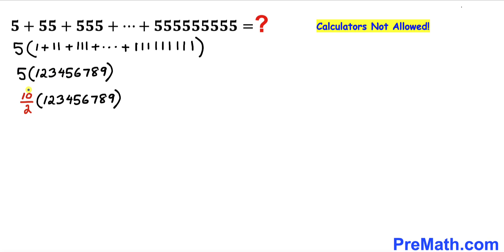Now in this next step I'm going to multiply this 10 with this whole number. So therefore on the numerator we are going to get 1, 2, 3, 4, 5, 6, 7, 8, 9, 0 and divided by this number 2 over here.